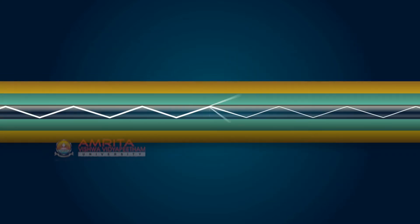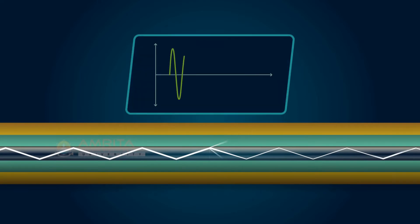Attenuation means loss of light energy as the light pulse travels from one end of the cable to the other. It is also called signal loss or fiber loss.